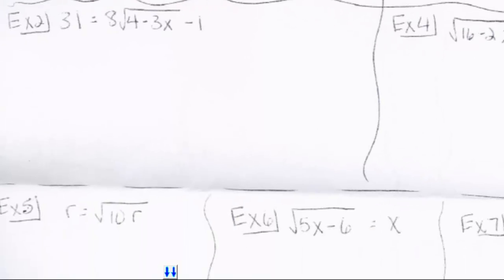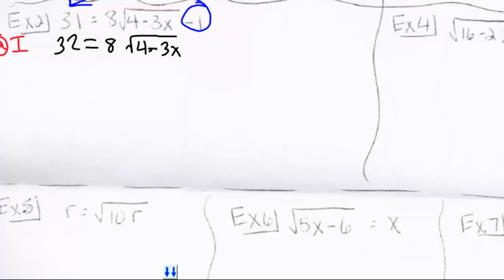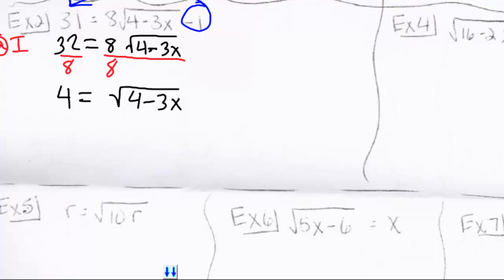Example 2. We need to isolate the radical first. By moving 1 to the other side, we end up with 32 equals 8 times the square root of 4 minus 3x. Notice I still have an 8 in front, so I have to divide both sides by 8. This gives us 4 equals the square root of 4 minus 3x. Now the radical is isolated.